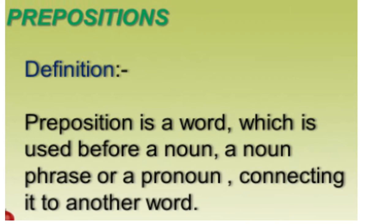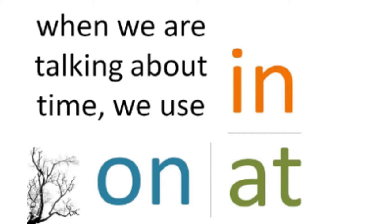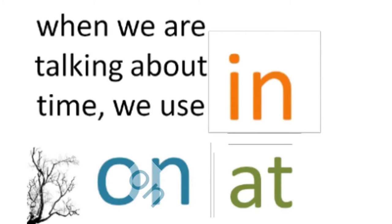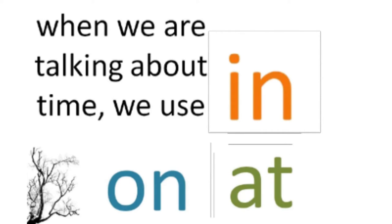जो हमें time के बारे में बताता है वो preposition use करते हैं। When we are talking about time, we use in, at, and on. जब हम वक्त के बारे में बात करते हैं तो हम तीन words यूज़ करते हैं preposition के तौर पर: in, at, और on।